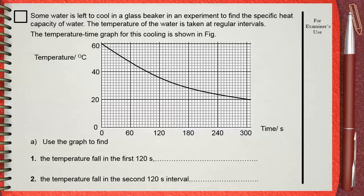Use the graph to find, number 1, the temperature fall in the first 120 seconds. Number 2, the temperature fall in the second 120 seconds interval.